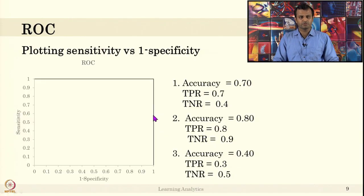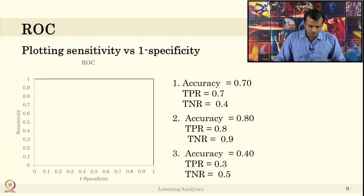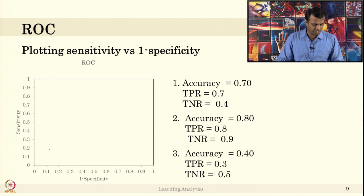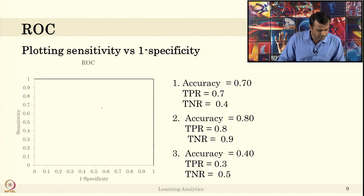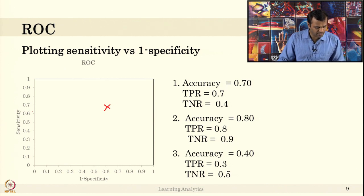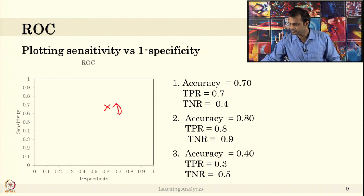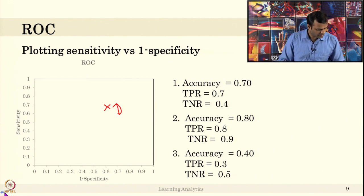Let us see which classifier is doing good. For the ROC, accuracy is not needed. For classifier 1: TPR (sensitivity) is 0.7 and TNR is 0.4, so 1 minus TNR equals 0.6. This means x equals 0.6 and y equals 0.7 — that is classifier 1's position on the ROC plot.